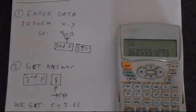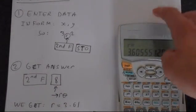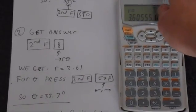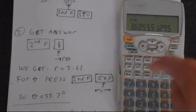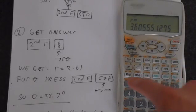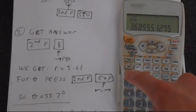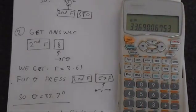So we want to get our value of theta as well. To do this, you need to press second function, and then there's a button on top of EXP that lets you cycle to the next calculated value. So that gives us theta, which is 33.7 degrees.